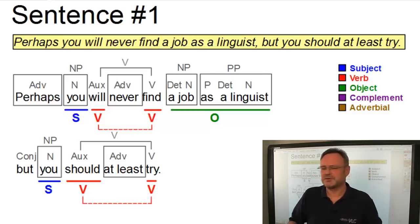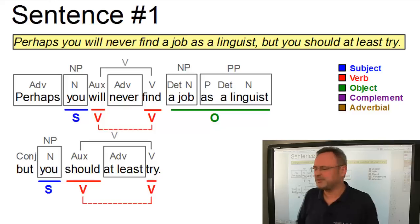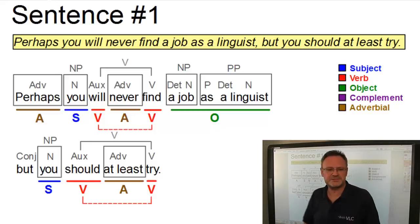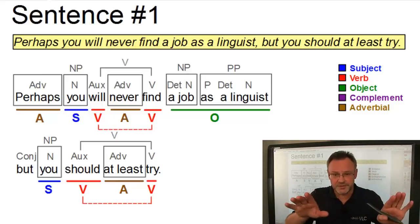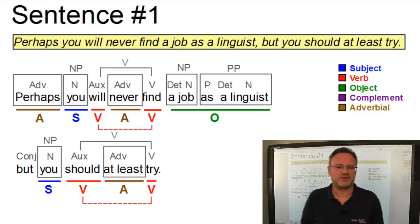So, this is a suitable test for the fact that a job as a linguist can occur as an object of this sentence. Finally, we have three adverbials in our sentence. Two of them inside the verb and one sentence initially. And they're all adverbs. They're all simple adverbs.